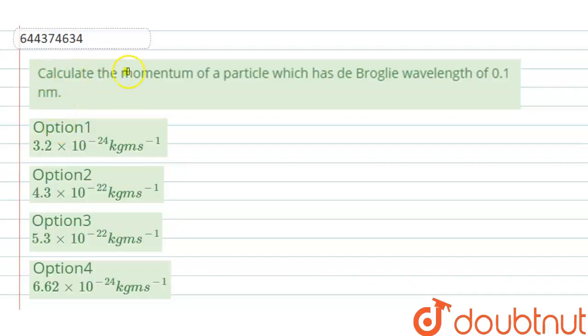The question is: calculate the momentum of a particle which has de Broglie wavelength of 0.1 nanometers. And these are the options.